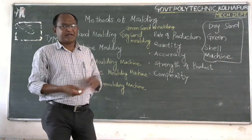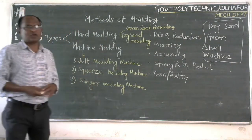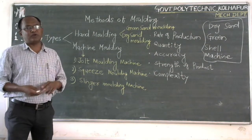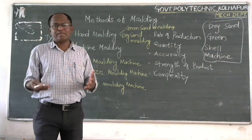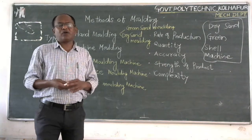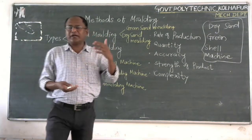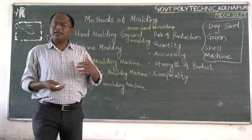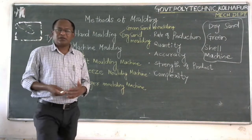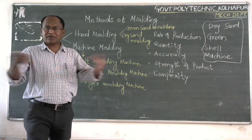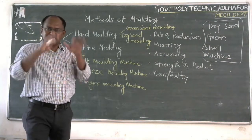So this is all about the green side and dry side molding process. In this lecture we are going to discuss about the methods of molding. Basically two methods of molding are there: how you are making the mold — whether by using manpower or by taking the aid of a machine. If you are carrying out the molding operation by using a machine, that is called machine molding. If you are preparing a mold by using your hand, picking up sand particles and ramming with your hand, pressing the sand particles inside the box, that is called hand molding.